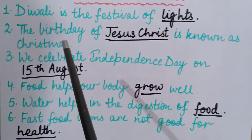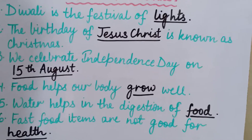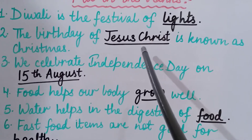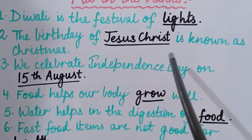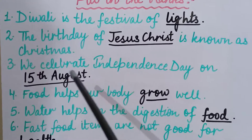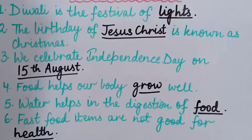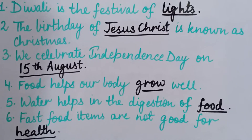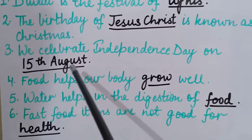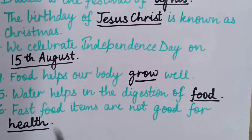Second sentence: The birthday of Jesus Christ is known as Christmas — J-E-S-U-S C-H-R-I-S-T, Jesus Christ. Third sentence: We celebrate Independence Day on 15th A-U-G-U-S-T, August. Fourth sentence: Food helps our body grow well.